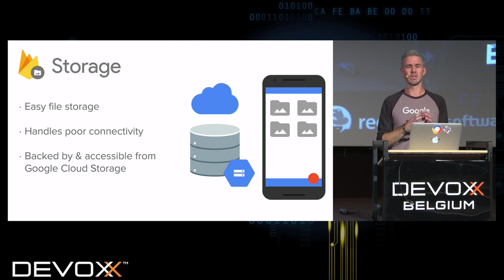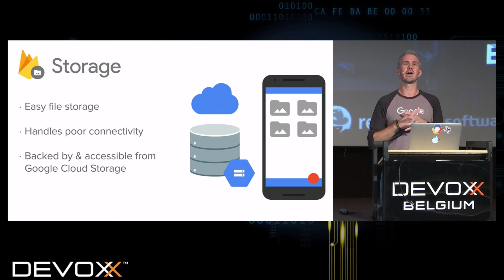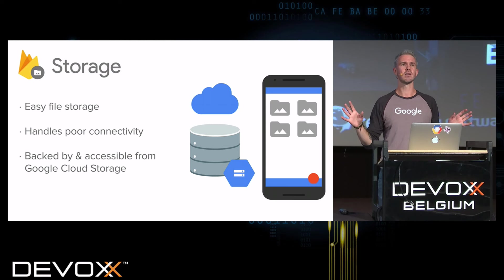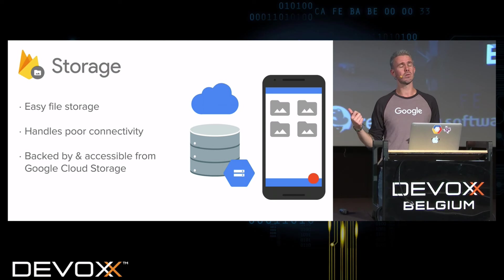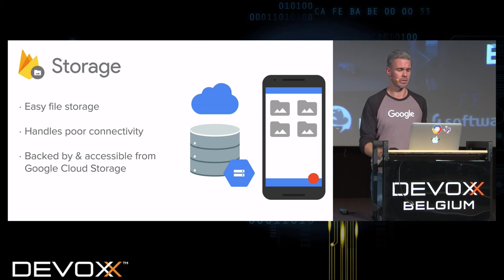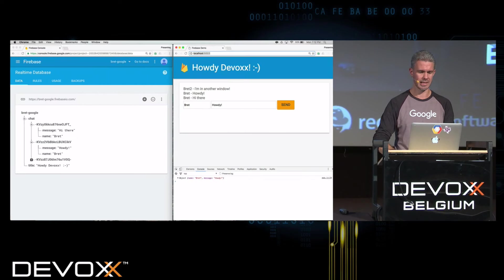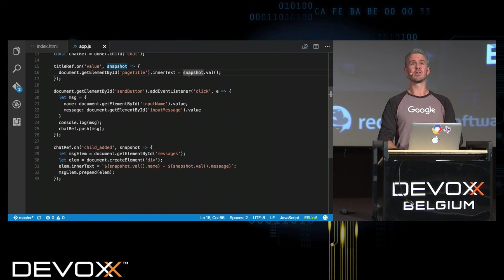The next thing we'll look at is Firebase Storage. This is one of the new things announced at Google I/O 2016. This lets you take your users' binary files and put them in our cloud. It's backed by Google Cloud Platform Cloud Storage, which means it can scale up to petabytes. It is distributed and extremely powerful. It also has security rules, everything happens over SSL, and you can write rules so only certain users can access certain files.